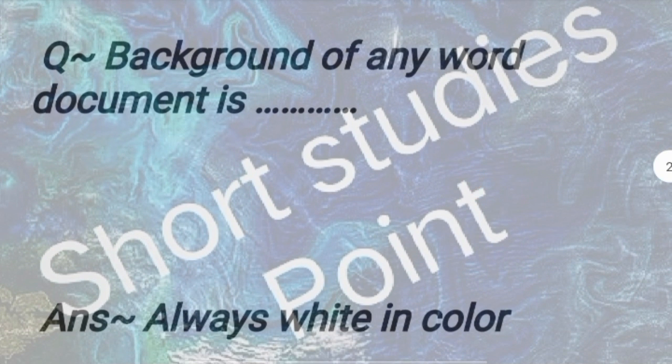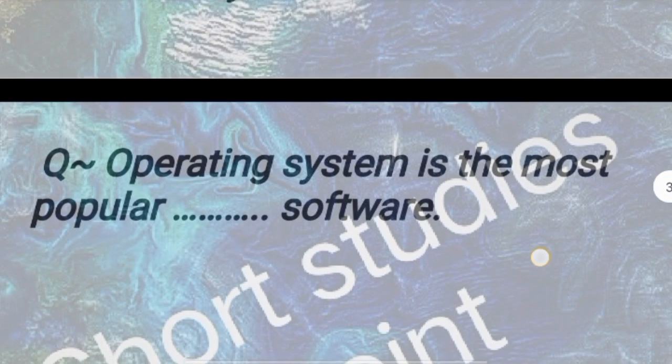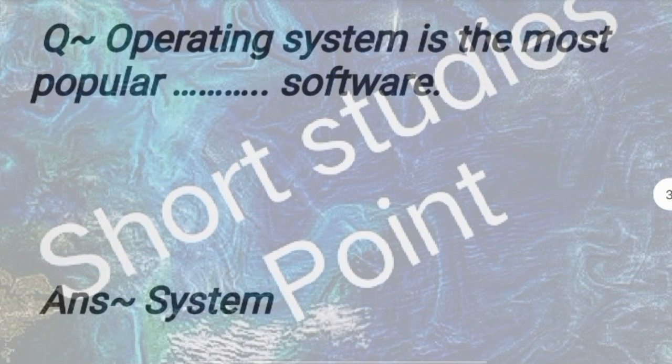Question: The background of any Word document is always white in color. Answer: True. Next question. Operating system is the most popular dash software. Answer: System software. Next question.